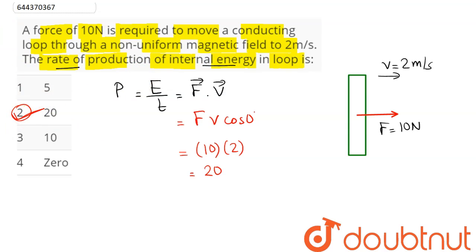The rate of internal energy being produced in the loop is here 20 watt. That is a force of 10 newton which is required to move a conducting loop through a non-uniform magnetic field to two meter per second. In this case, the energy which will be produced here, the internal energy in the loop is 20 watt.